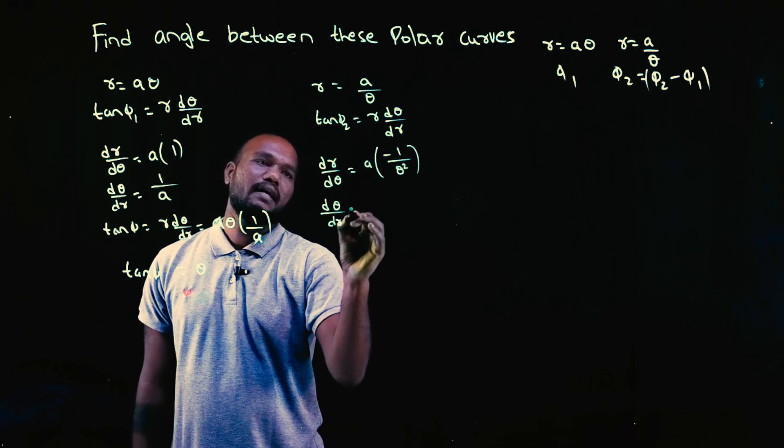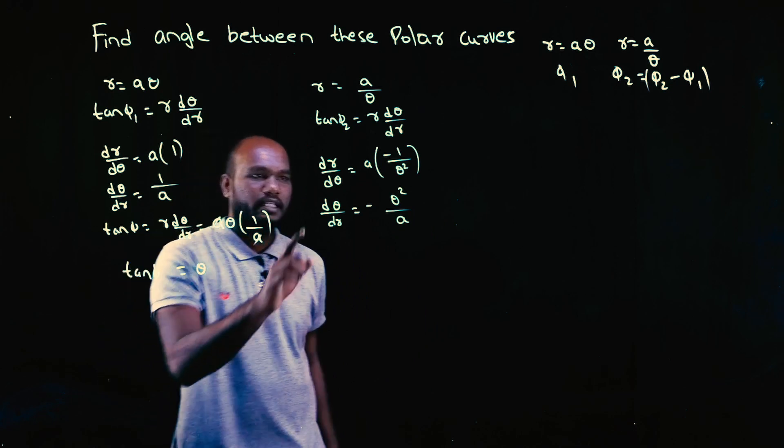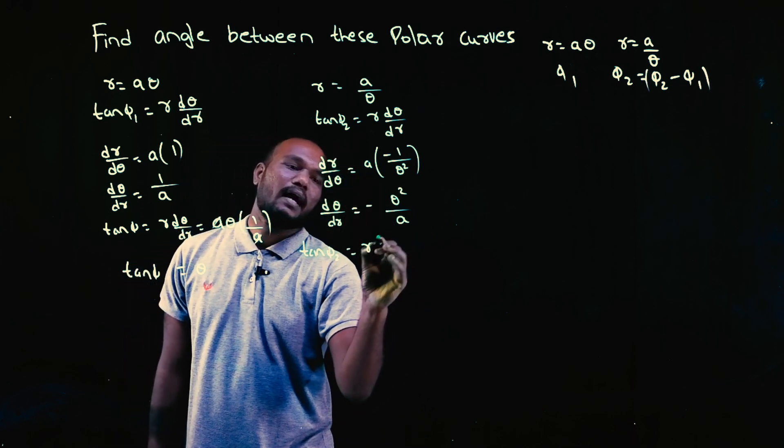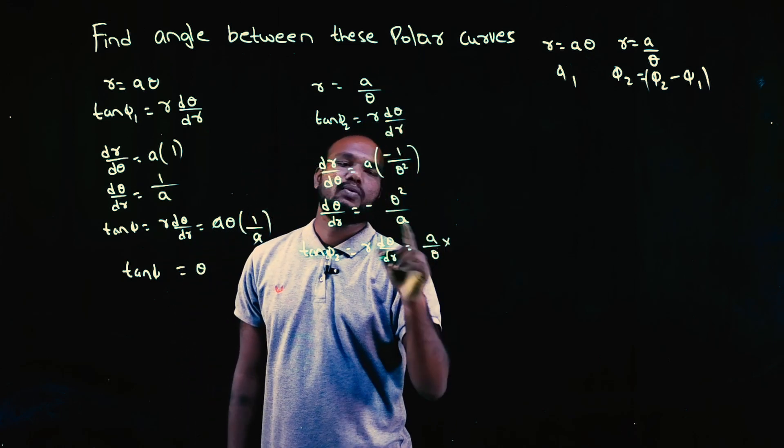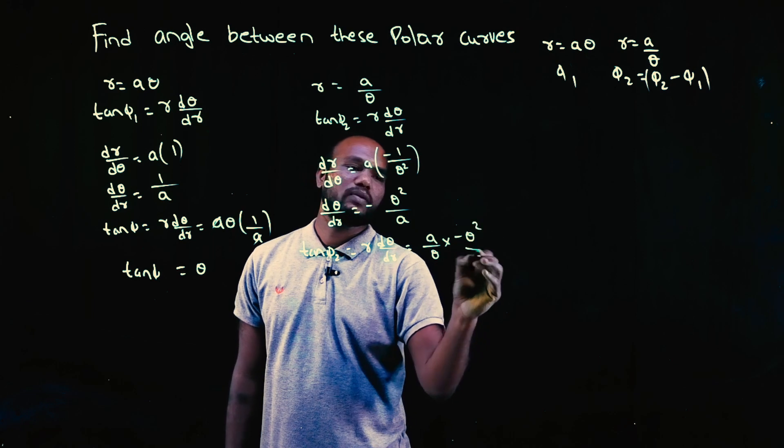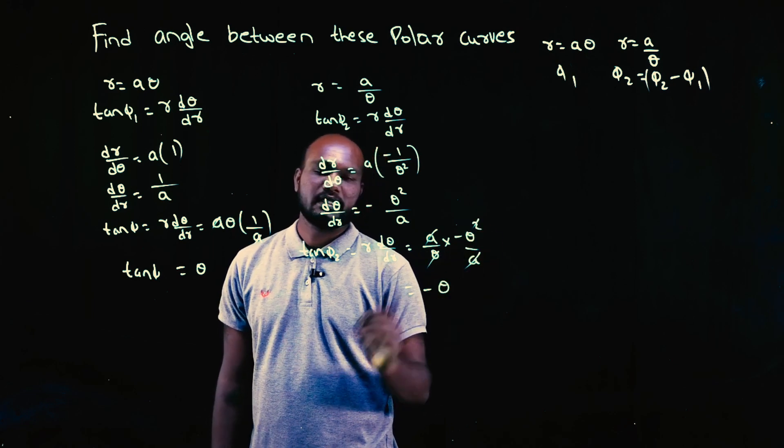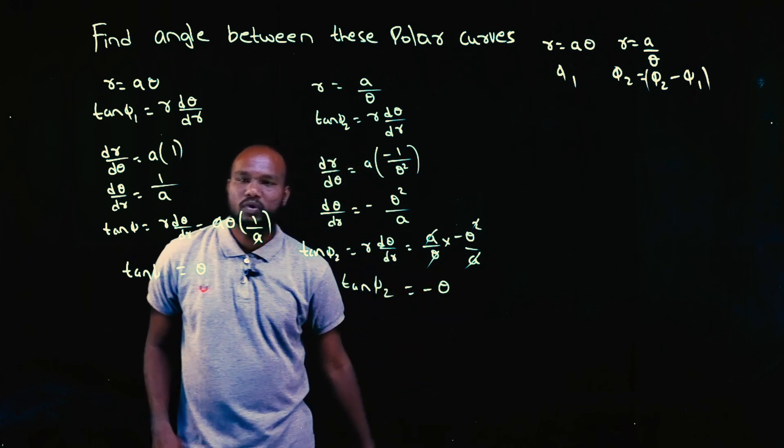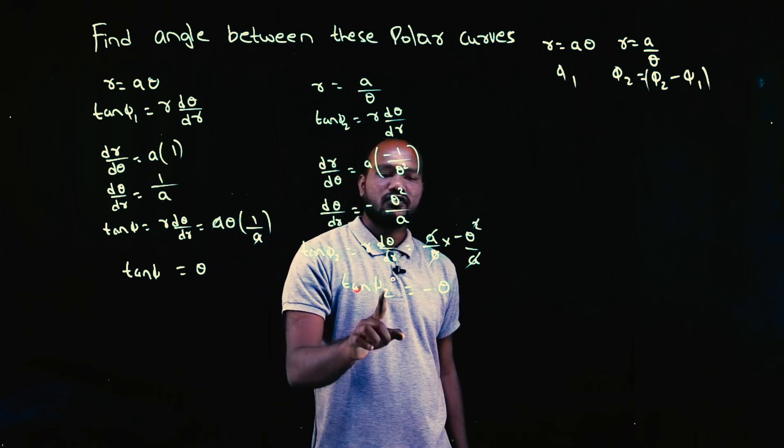Next, I need reverse of this, that is dθ/dr = -θ²/a. This is tan φ₂: r·dθ/dr. What is r? a/θ into dθ/dr, which is -θ²/a. A gets cancelled, one theta, one theta, one theta, so -θ. This is tan φ₂.